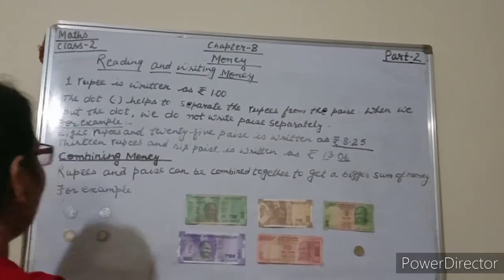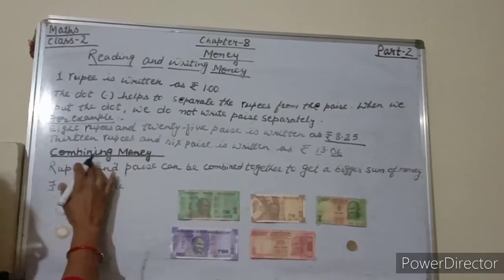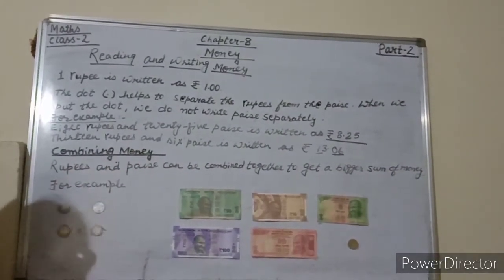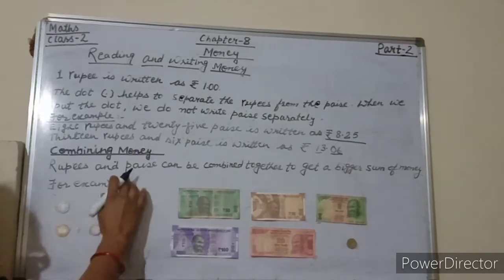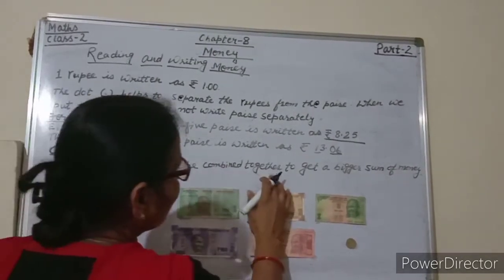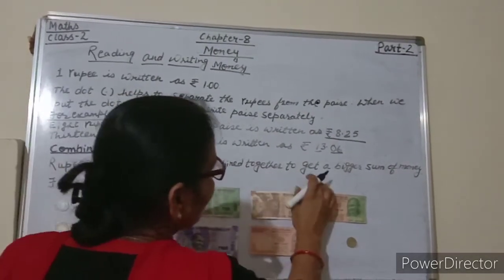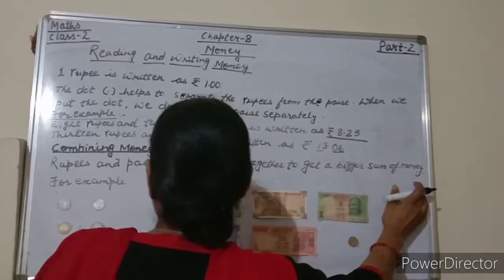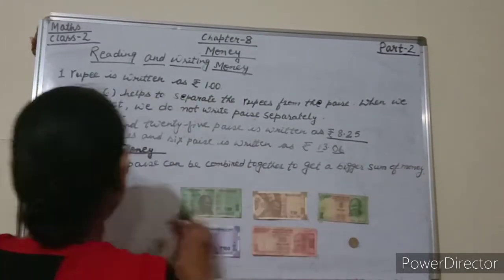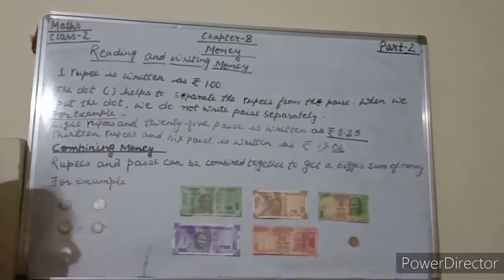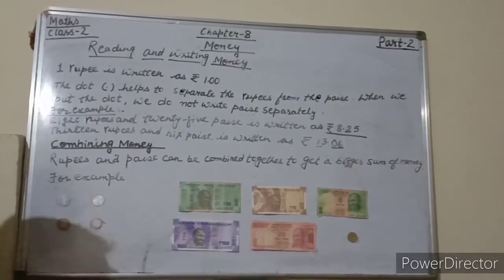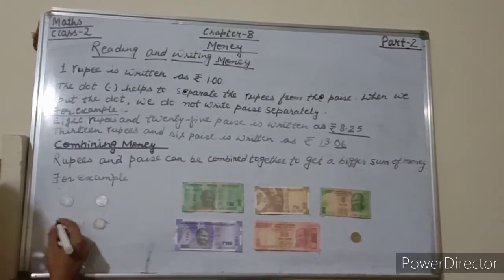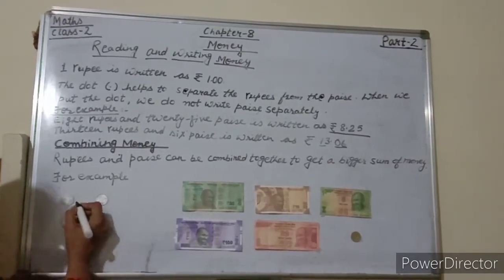Now, combining money. Rupees and paise can be combined together to get a bigger sum of money. For example, we will combine the rupees and paise.